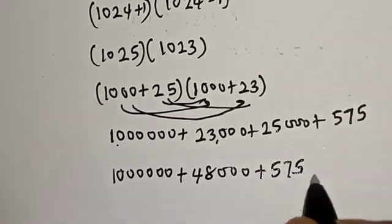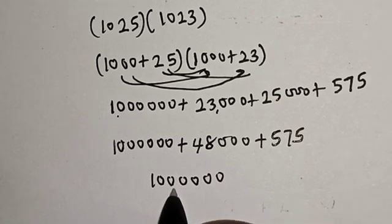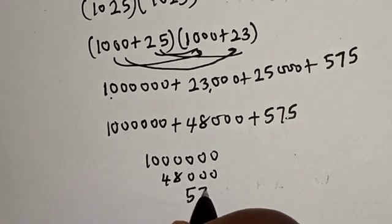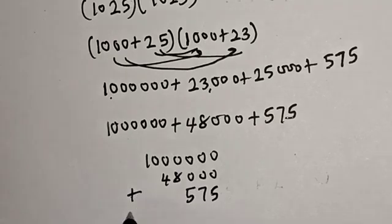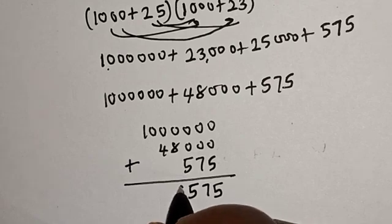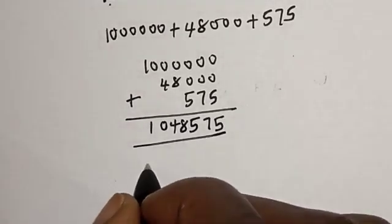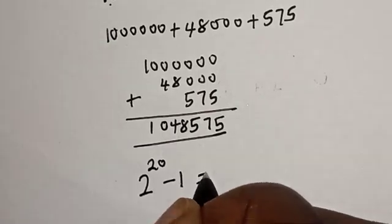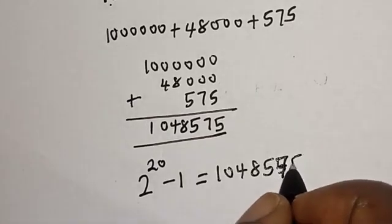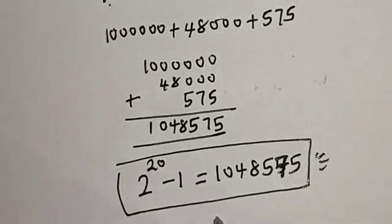This is 1 million plus 23,000 plus 25,000, which is 48,000, plus 575. Now let's add everything together: 1,000,000 plus 48,000 plus 575 equals 1,048,575. Therefore, 2 raised to power 20 minus 1 equals 1,048,575. Before you leave, like, share, comment and subscribe. Thank you, bye bye.